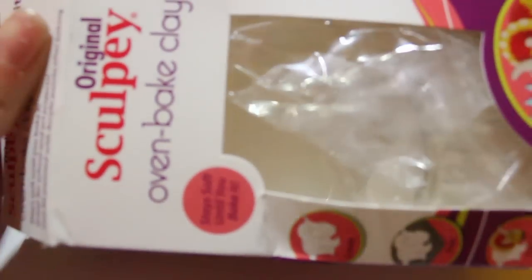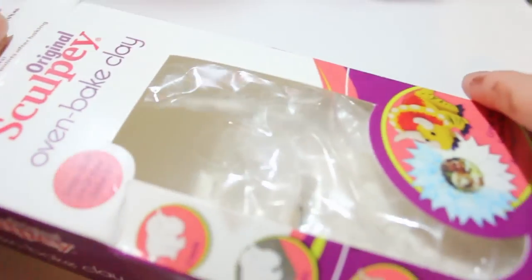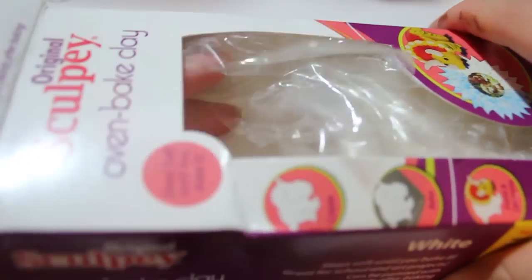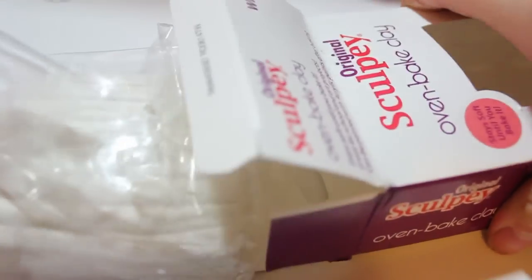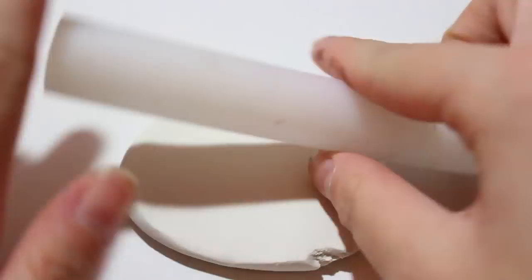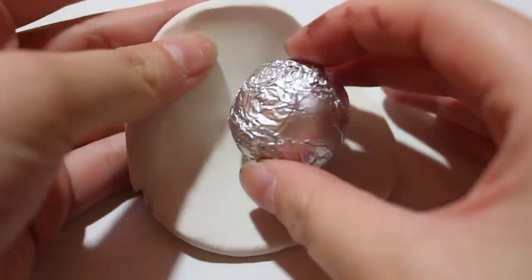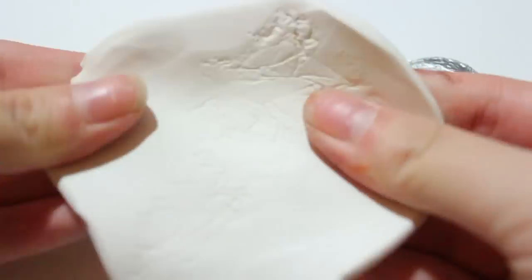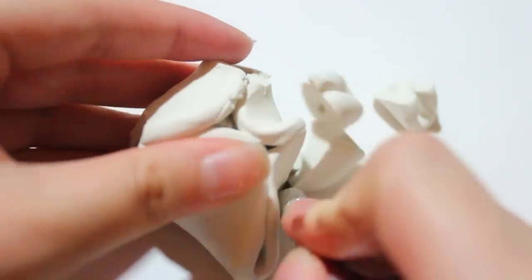Next I'm going to be using some oven-baked clay by Sculpey. I got this from Walmart for I think like two bucks. It was really cheap and a lot cheaper than using polymer clay. Afterwards we are going to start rolling it out to flatten it and you kind of want it to be as even as possible. If it's not even it's okay, it just might be a little thicker on one side than the other.